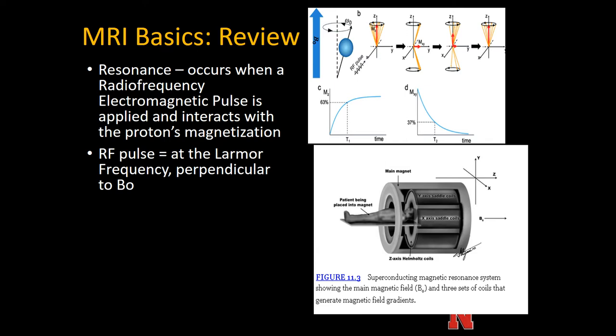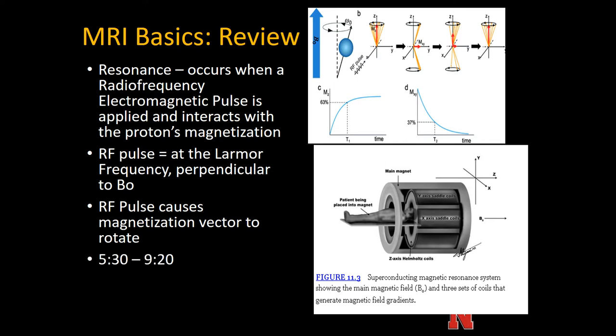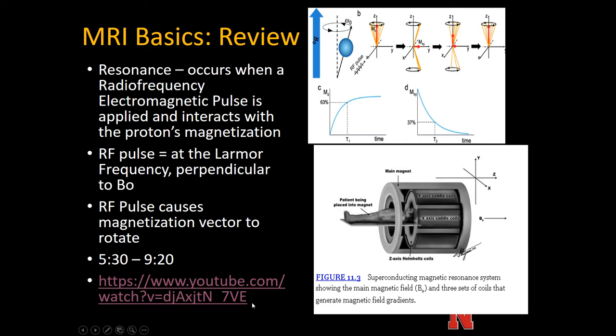The RF pulse must be at the Larmor frequency and is by definition perpendicular to B0. We will talk about different flip angles, but for baseline, the RF pulse is perpendicular to B0 and causes the magnetization vector to rotate. Here's the link to a video — I encourage everyone to go watch these; this creator has a lot of great videos on basic physics topics.